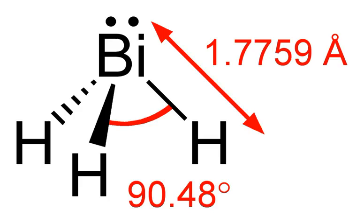Bismuthine is the chemical compound with the formula bismuth trihydride (BiH₃). As the heaviest analogue of ammonia, bismuth trihydride is unstable, decomposing to bismuth metal well below 0 degrees Celsius.